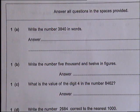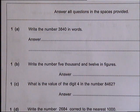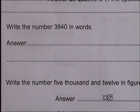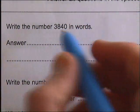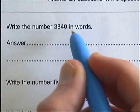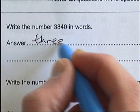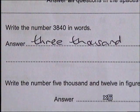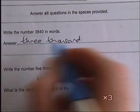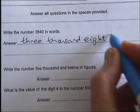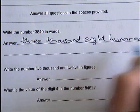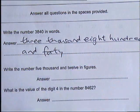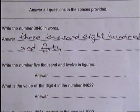The first question says: write the number 3840 in words. If you think of it, it's got your thousands, hundreds, tens, and units. Write down three thousand — they're not looking so much for correct spelling as long as they can tell it's the right words — so three thousand eight hundred and forty.